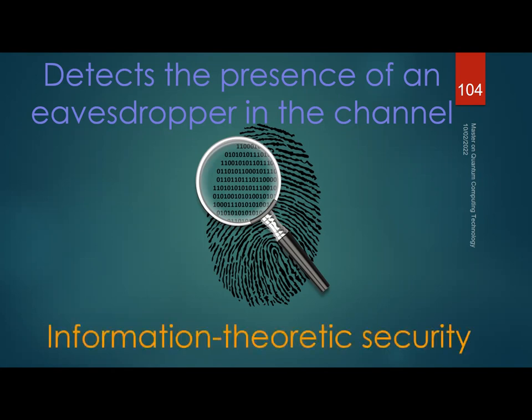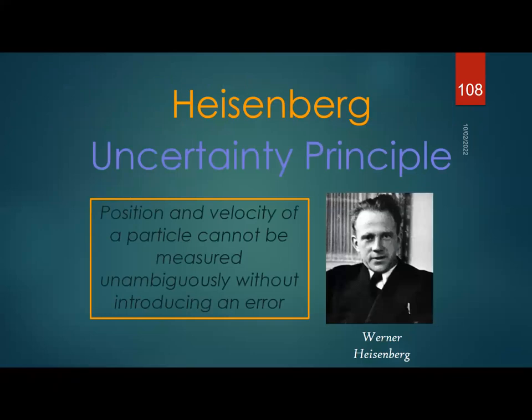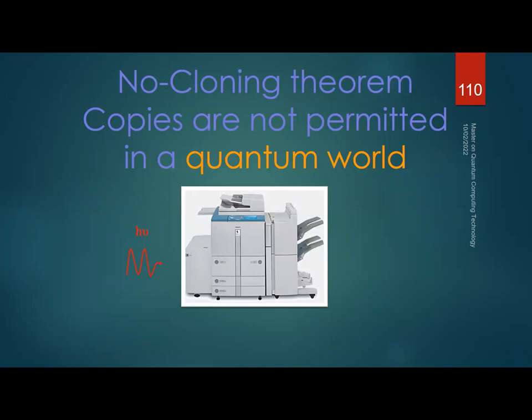This gives us information-theoretic security, because the eavesdropping is something you cannot avoid leaving a trace of. It's based on quantum mechanics — specifically the Heisenberg uncertainty principle, which states that pairs of magnitudes cannot be measured unambiguously without introducing an error, such as position and velocity. The second property is the no-cloning theorem: you cannot make a perfect copy of an unknown quantum state.